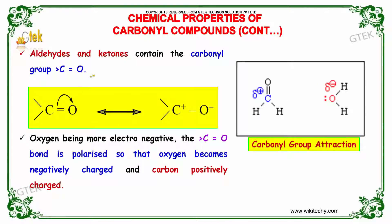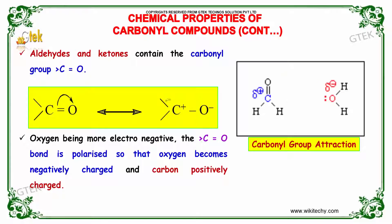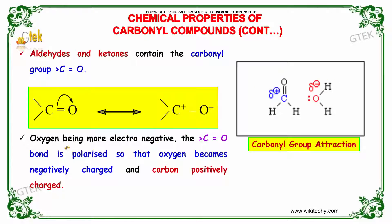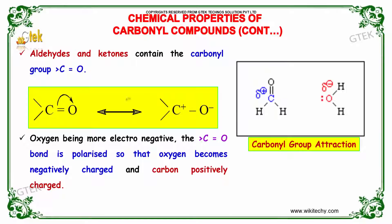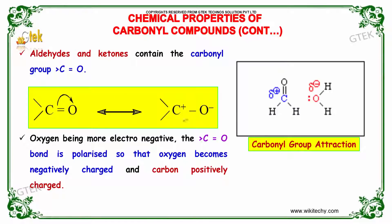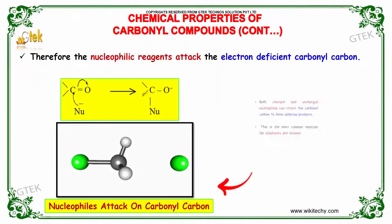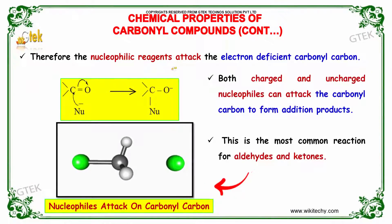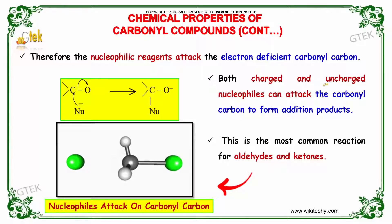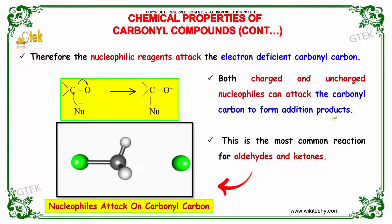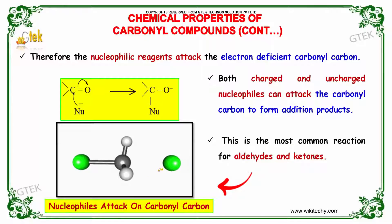Aldehydes and ketones contain the carbonyl group, that is C double bond O. Oxygen being more electronegative, the C=O bond is polarized so that the oxygen becomes negatively charged and carbon becomes positively charged. Therefore, nucleophilic reagents attack the electron-deficient carbonyl carbon. Both charged and uncharged nucleophiles can attack the carbon to form addition products. This is the most common reaction for aldehydes and ketones.